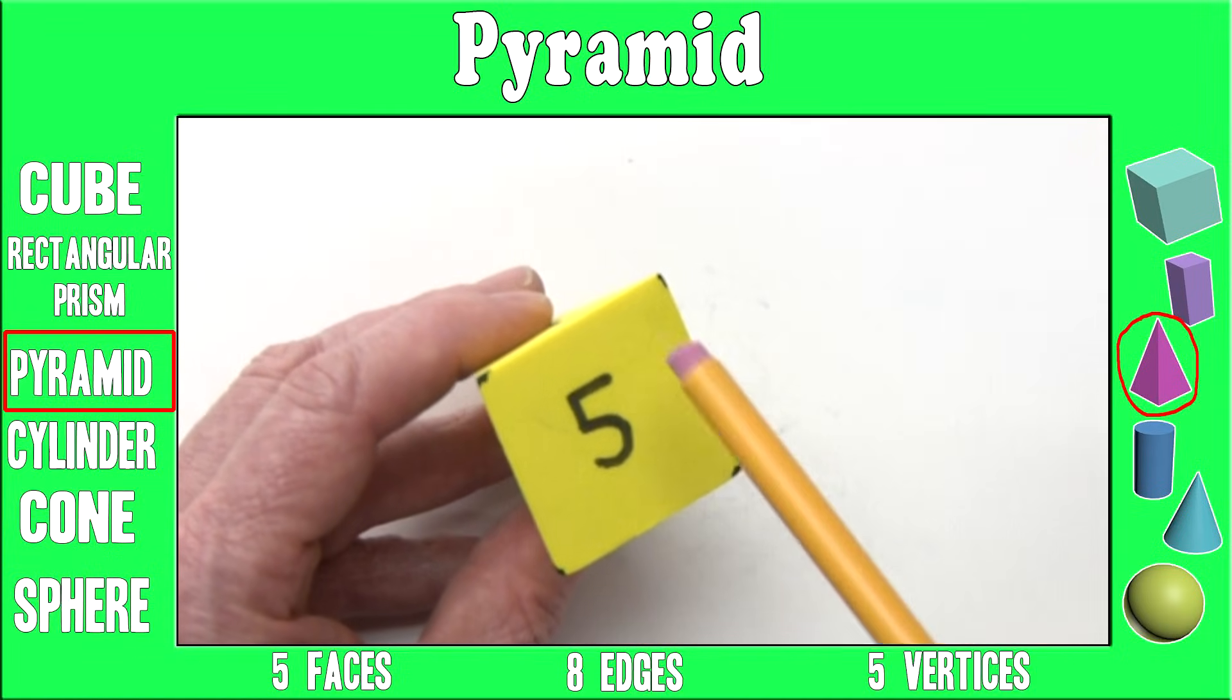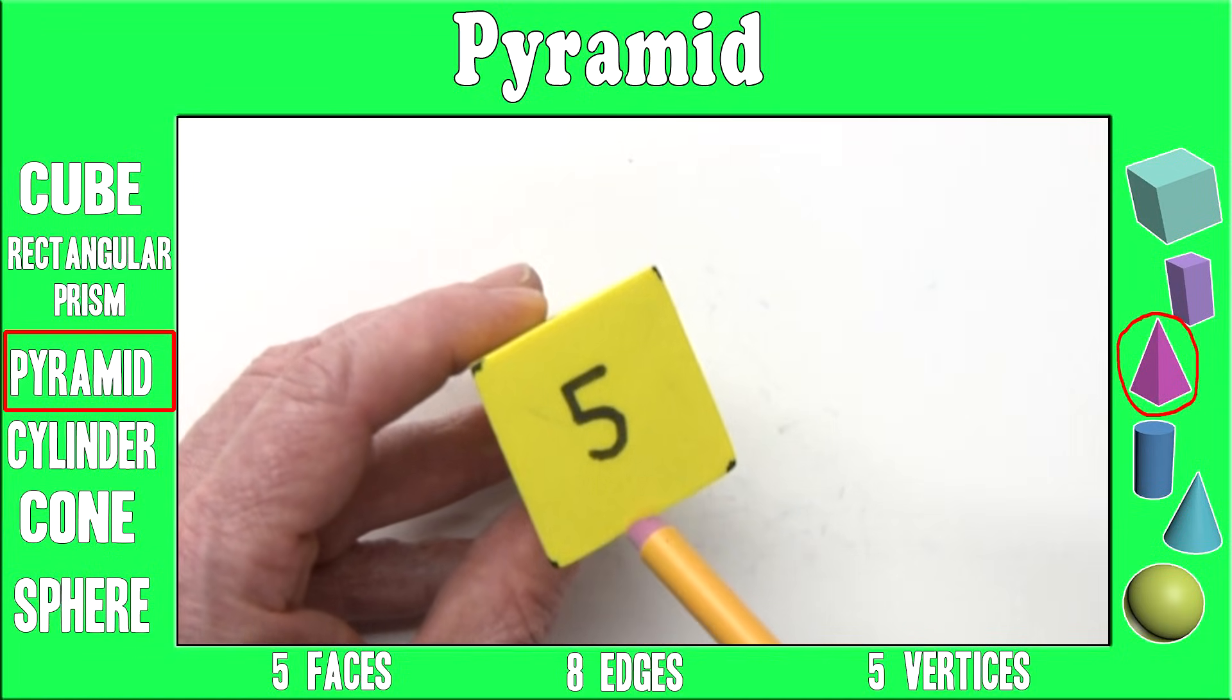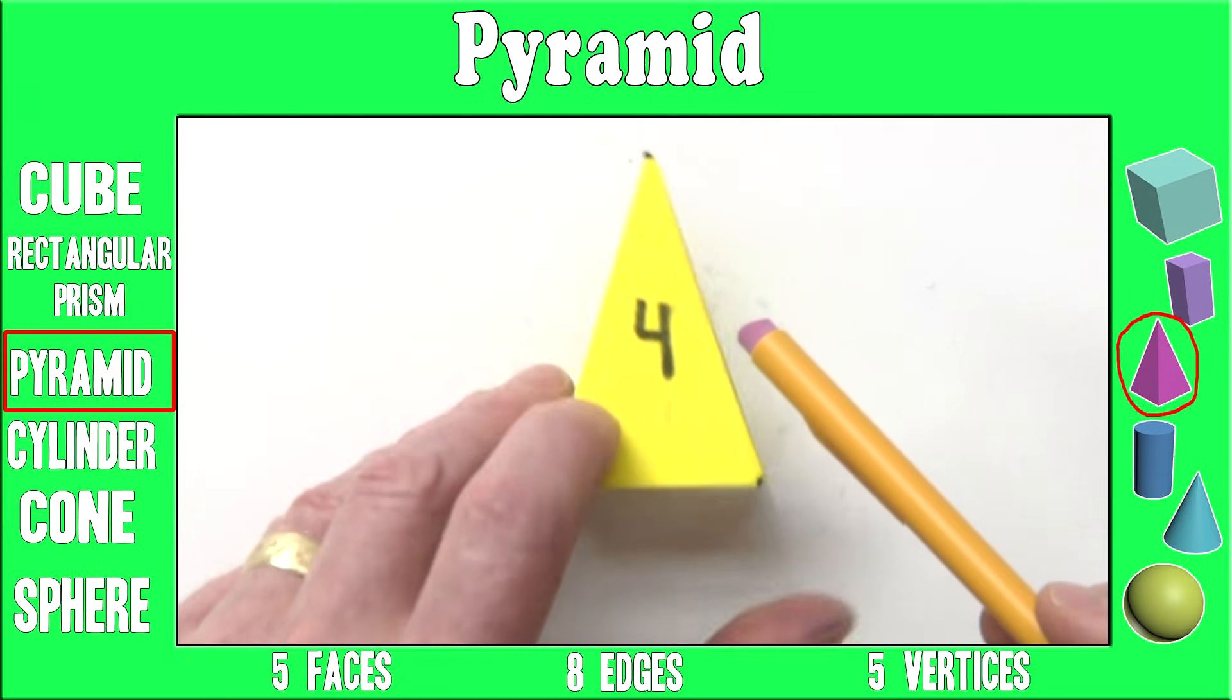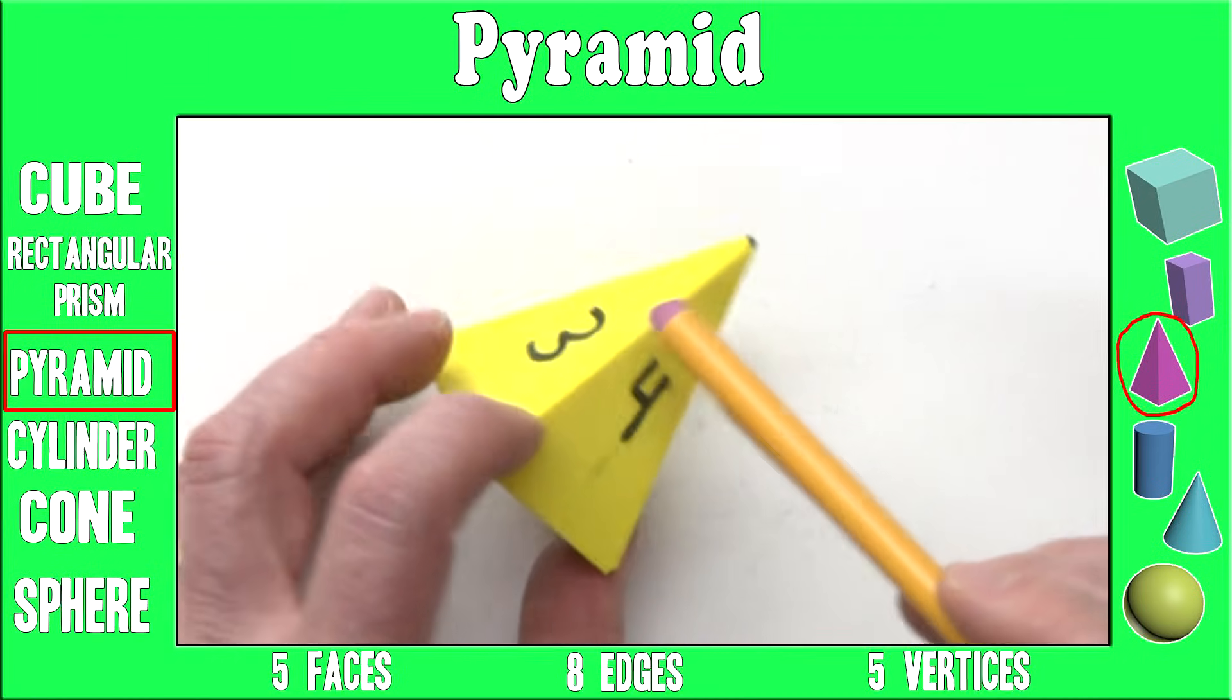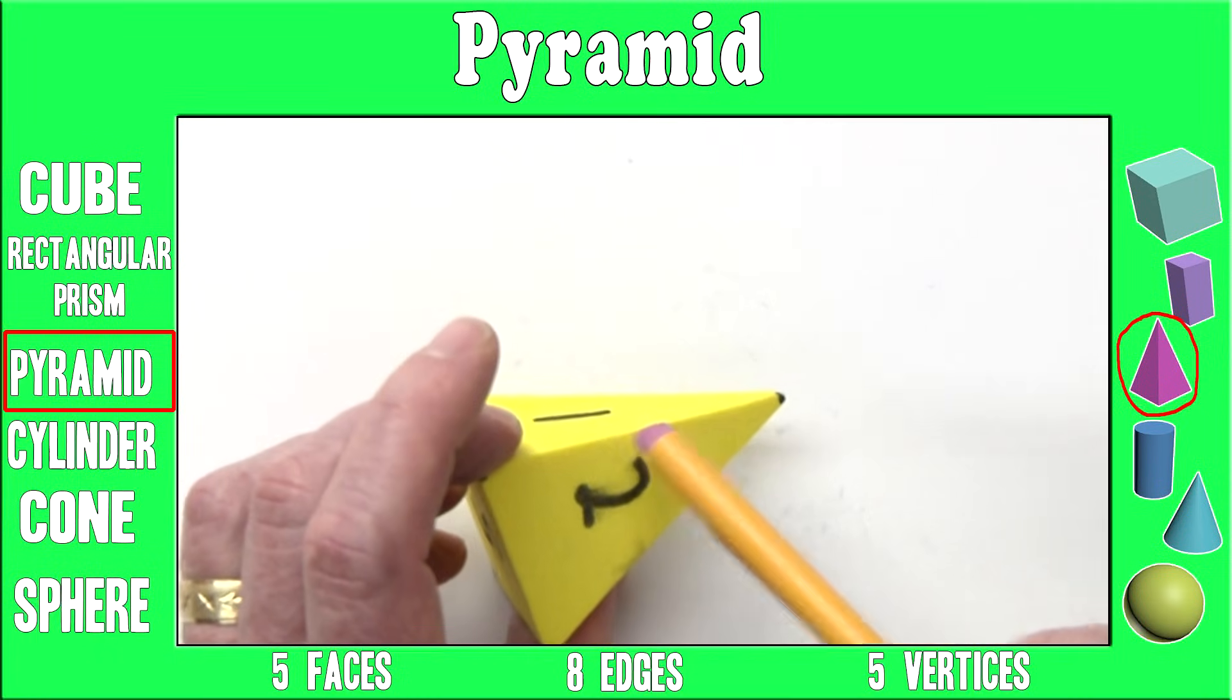A pyramid has eight edges. One, two, three, four, five, six, seven, eight.